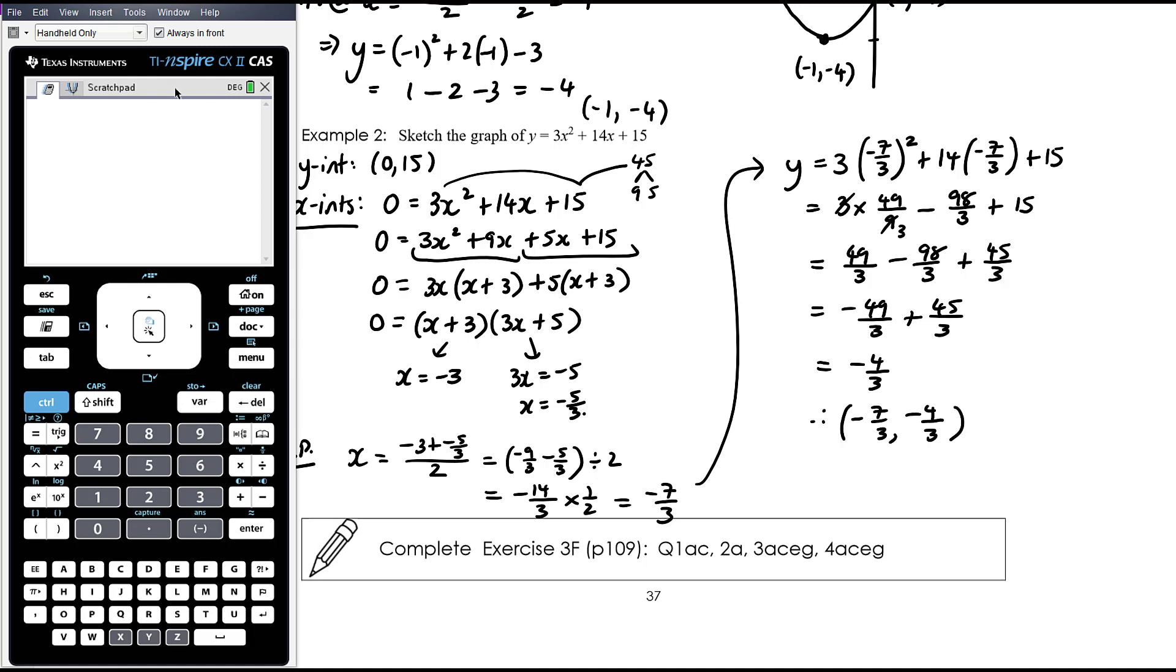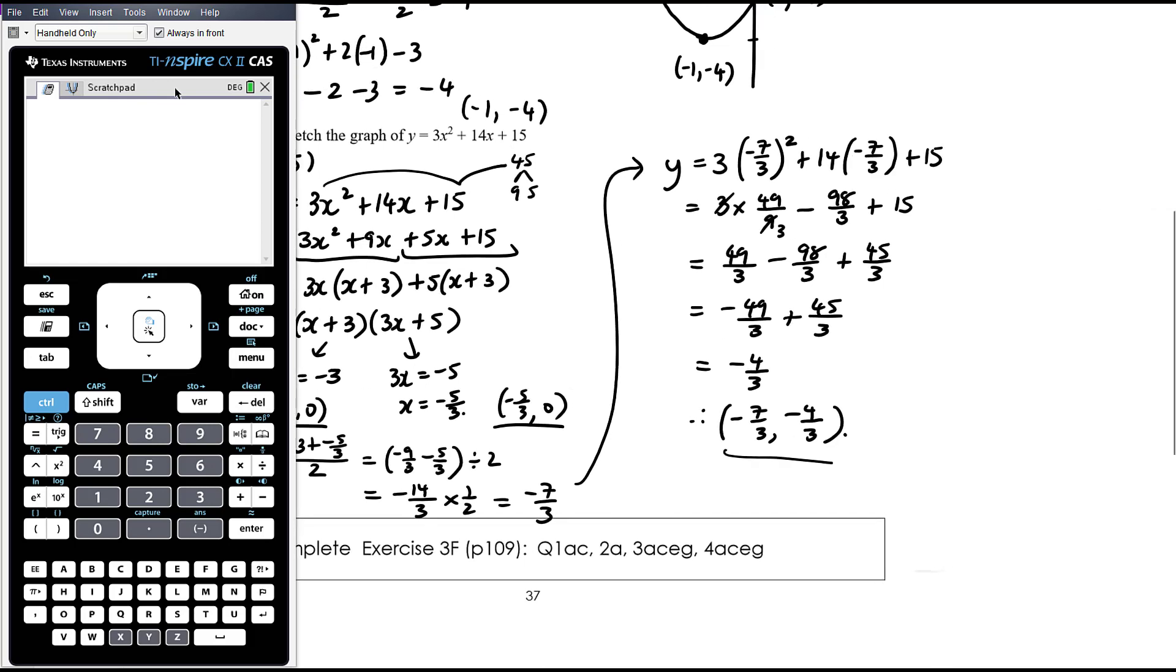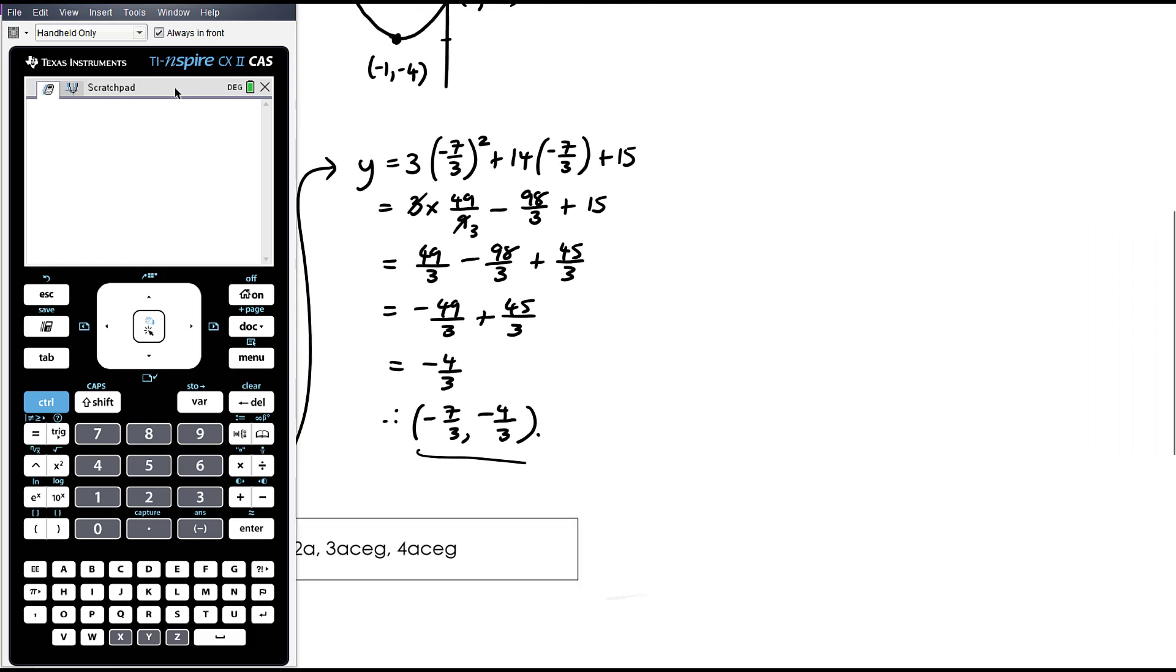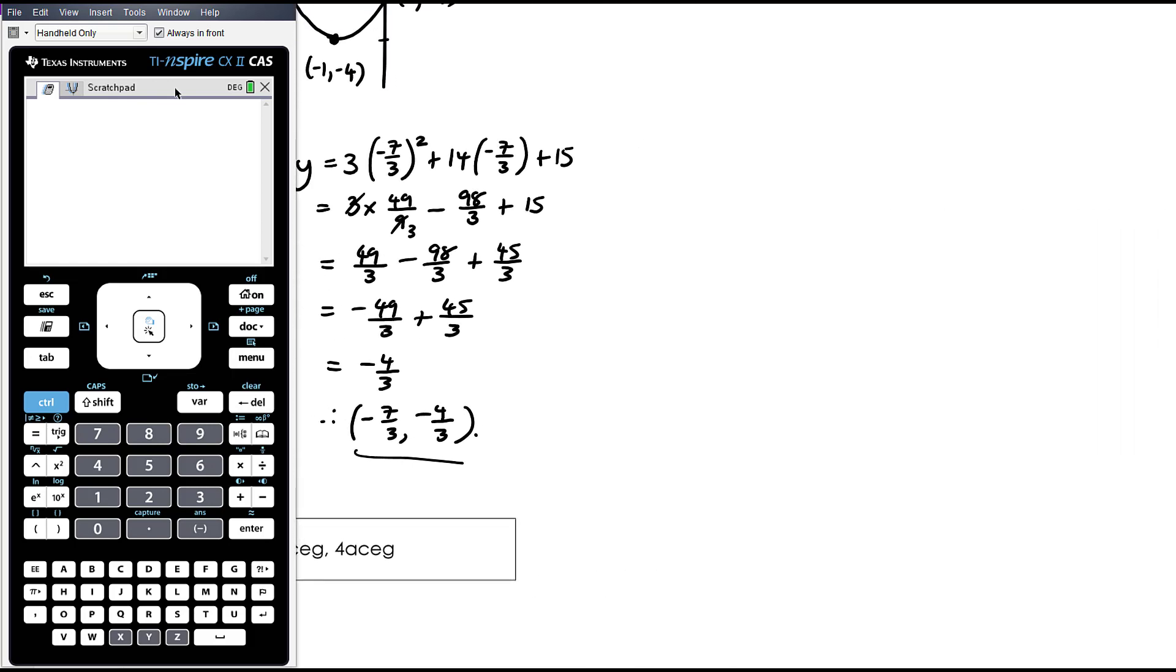So therefore our turning point is at negative 7 thirds, negative 4 thirds. So we've got our x-intercepts, which are here, negative 3, 0 and negative 5 thirds, 0. We've got our turning point and we've got our y-intercept at 15. So I'm just, negative 5 thirds is negative 1 and 2 thirds, just as a rough idea of what's happening there. 7 thirds is just a bit more than 2, but we've got a really big y-intercept to be a bit mindful of.